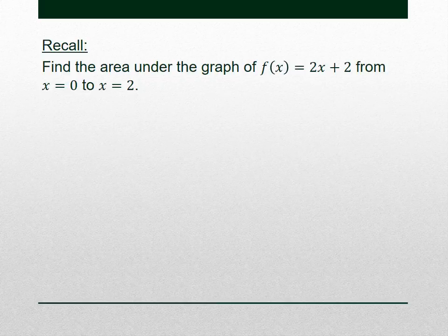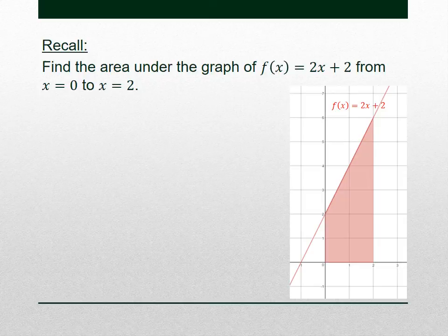Let's go back to what we were doing in 5.4 for just a bit. Let's try to find the area under the graph, or between the graph and the x-axis, with this function f(x) = 2x + 2, from 0 to 2. I'll graph that — we've got this graph, it's a straight line.